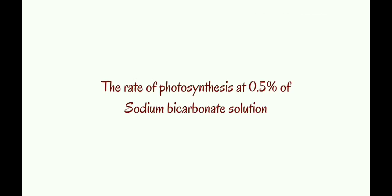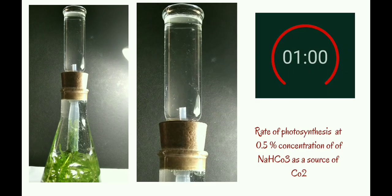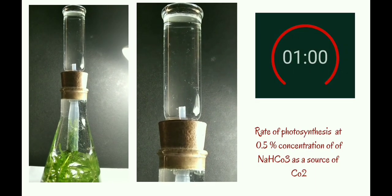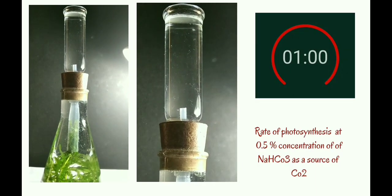Let's see the rate of photosynthesis at 0.5% sodium bicarbonate solution — what will happen when the concentration of carbon dioxide is 0.5%. Here is the timer. When the timer starts, we will count the number of air bubbles for 1 minute.